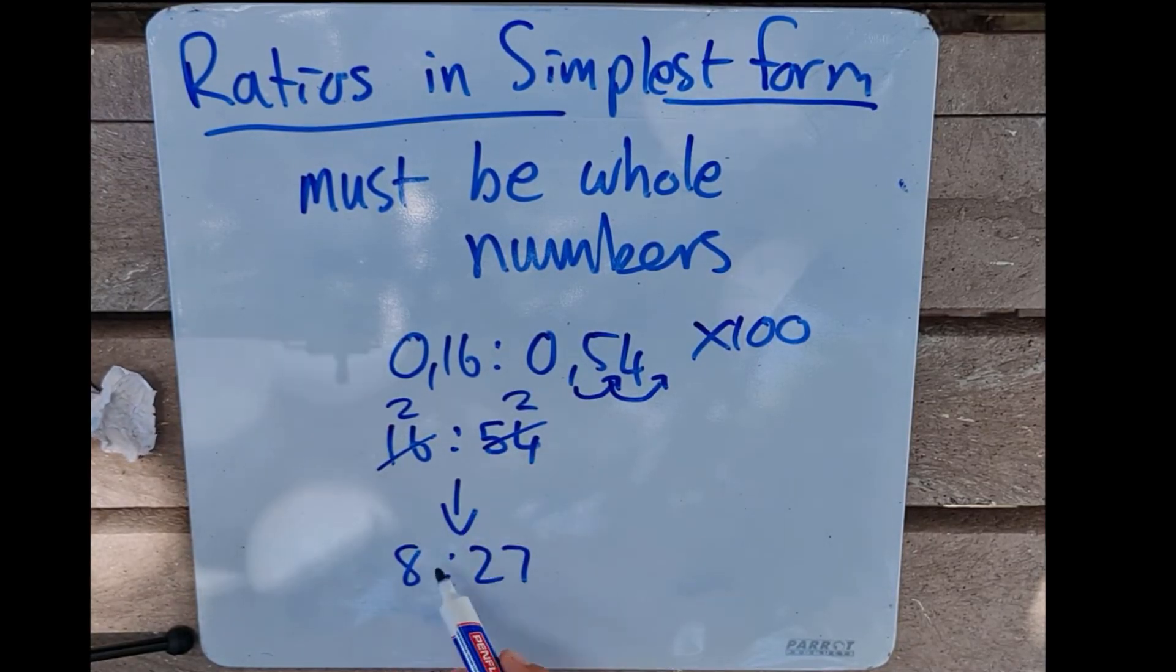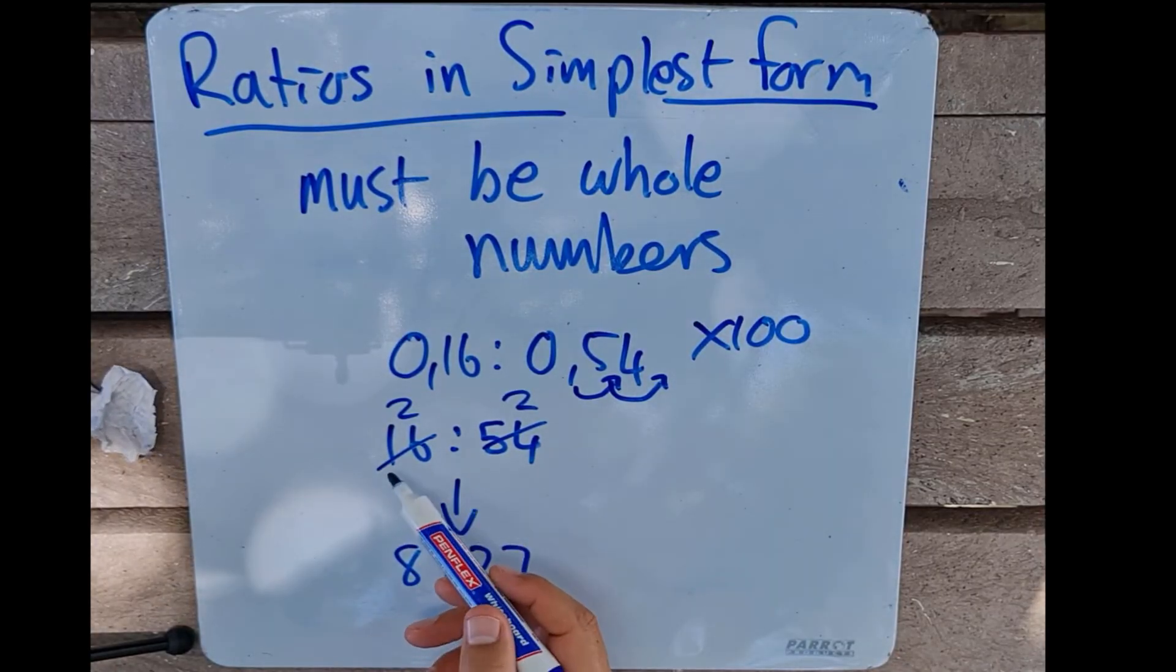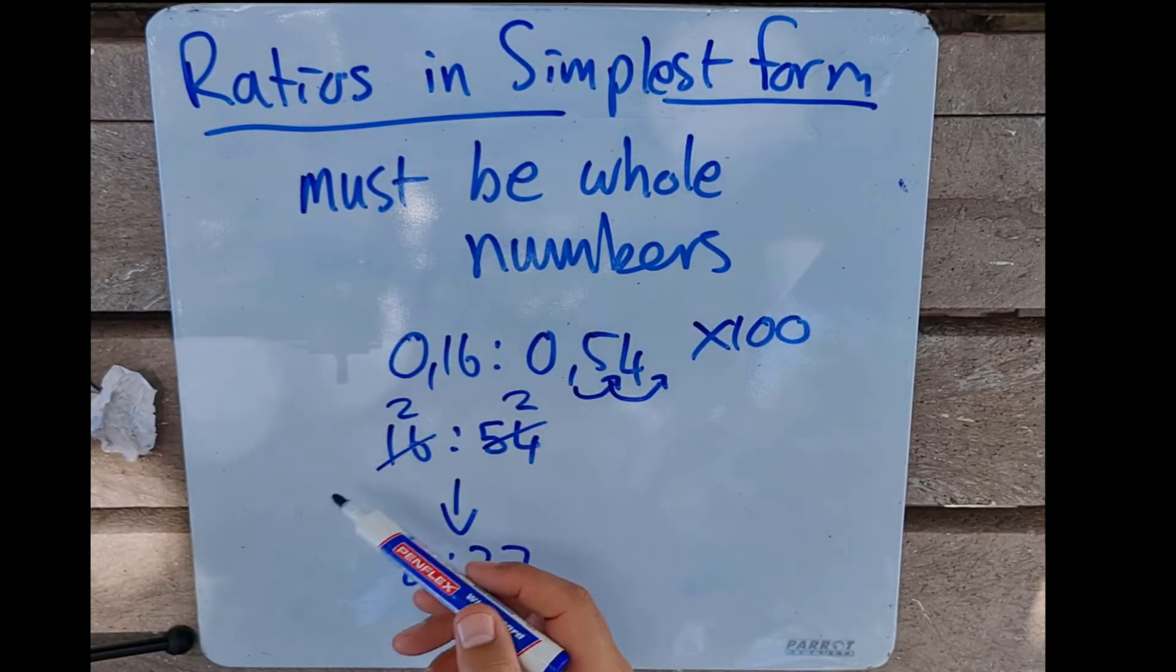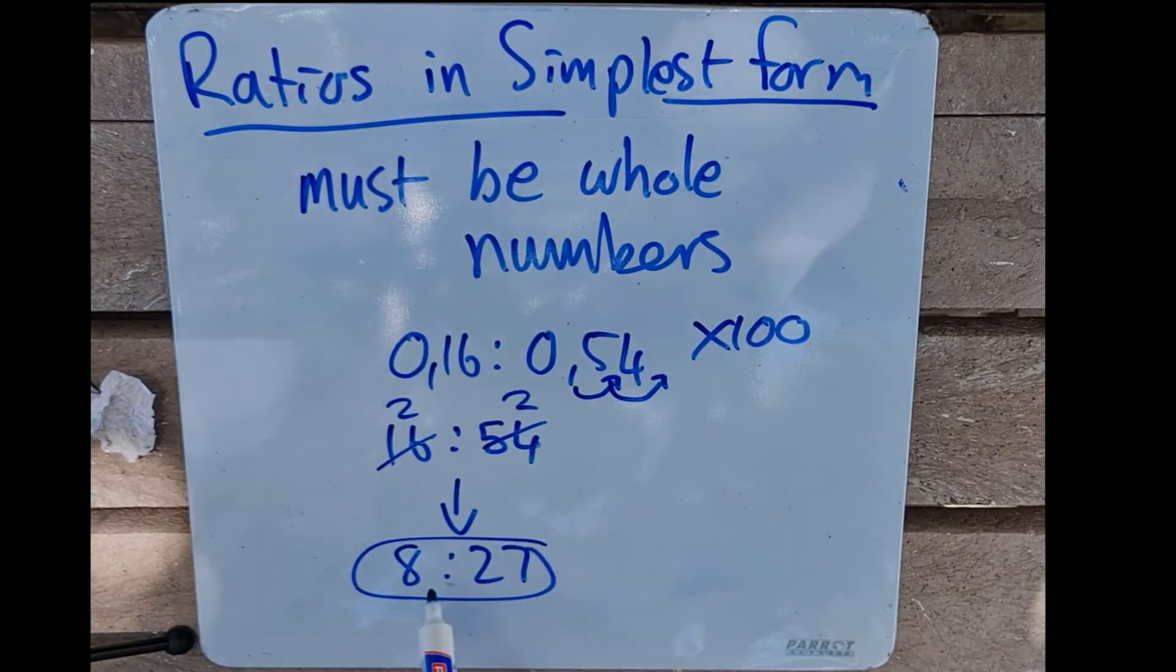And that's why we do that. If the numbers are different and it needs to be divided by 3 on both sides, or 4, or 5, then that is what we're going to do in order to get the ratio in our simplest form.